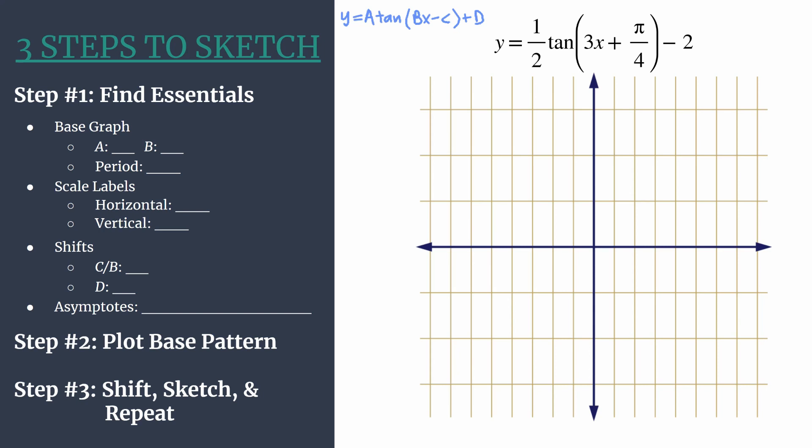Let's start with step 1. We'll find the essentials starting first by breaking down what will be part of our base graph for our base pattern in step 2. So we have a, which is the coefficient of tangent, which is 1/2. This value will actually help us with the y-coordinates of our curve shaping points. It's a vertical shrink from our parent graph y equals tangent x, so it'll be vertically compressed down.